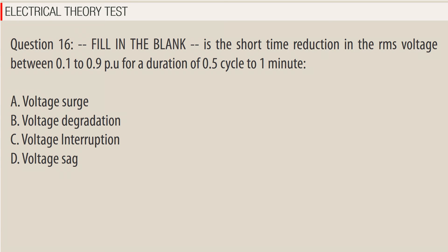Question 16: Fill in the blank. This is the short-time reduction in the RMS voltage between 0.1 to 0.9 pu for a duration of 0.5 cycle to 1 minute. A. Voltage surge. B. Voltage degradation. C. Voltage interruption. D. Voltage sag.